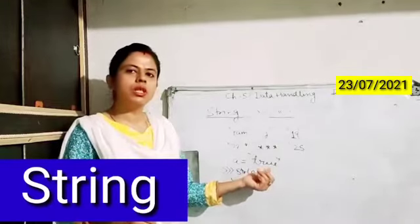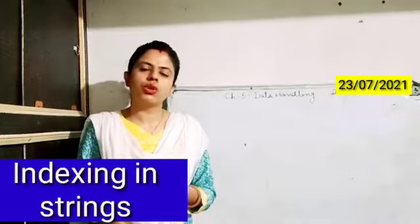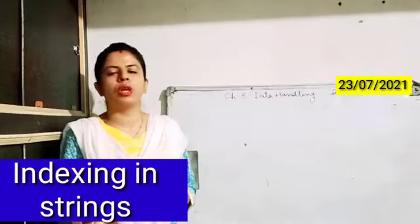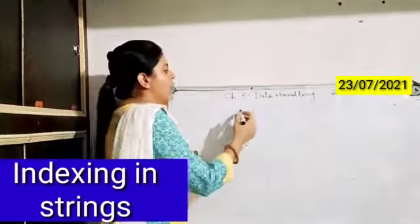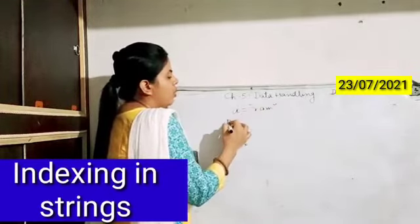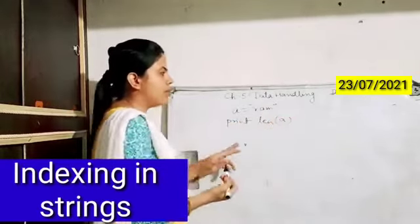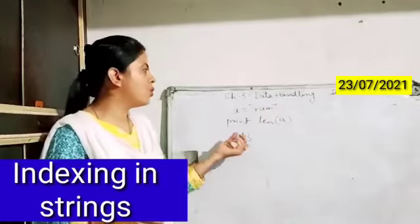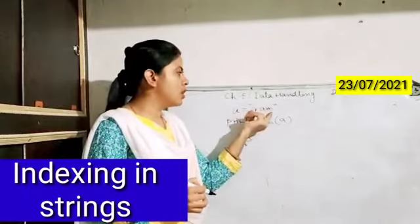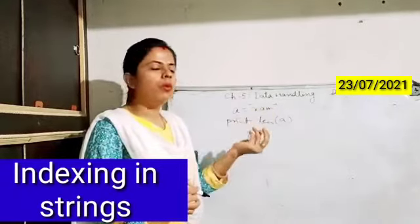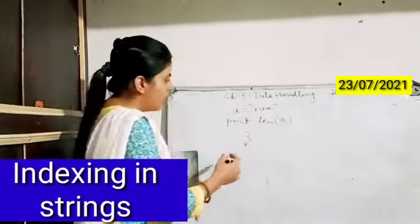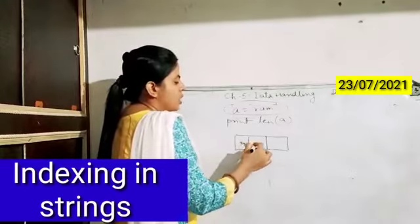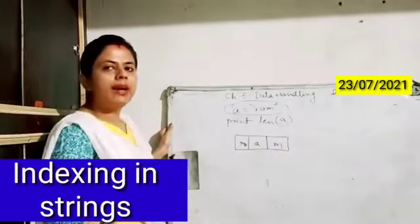Now I want to tell you how strings are stored in memory in Python and how they can be accessed at a particular position. Suppose I write a = 'ram' and I want to find out the length of the string — I can use the len() function, which gives me the answer 3. Whenever you write a = 'ram', it takes space in memory and the indexing is provided to each particular character.